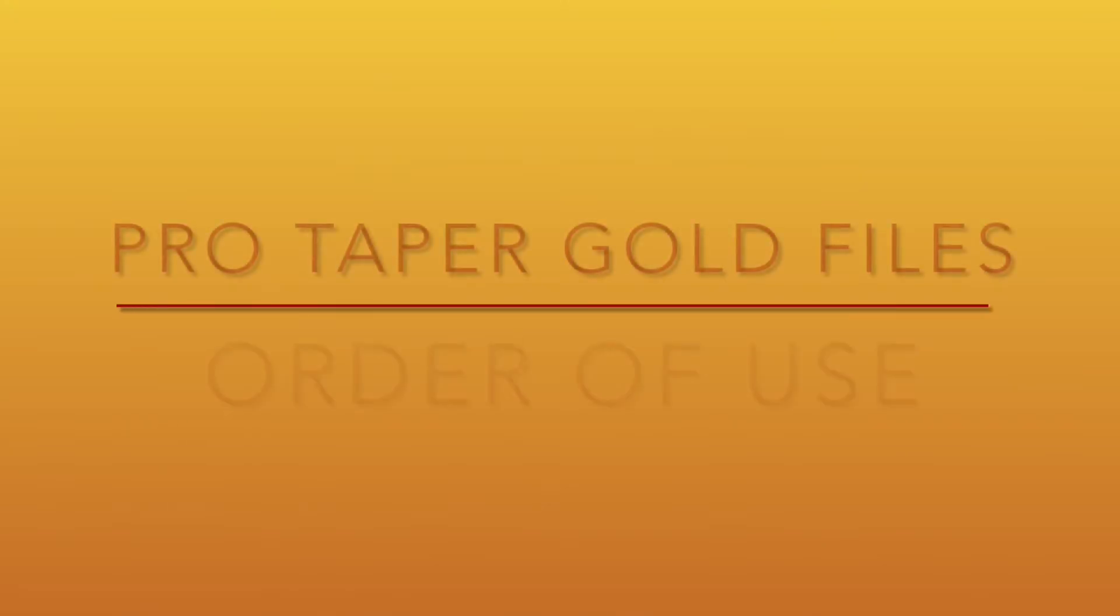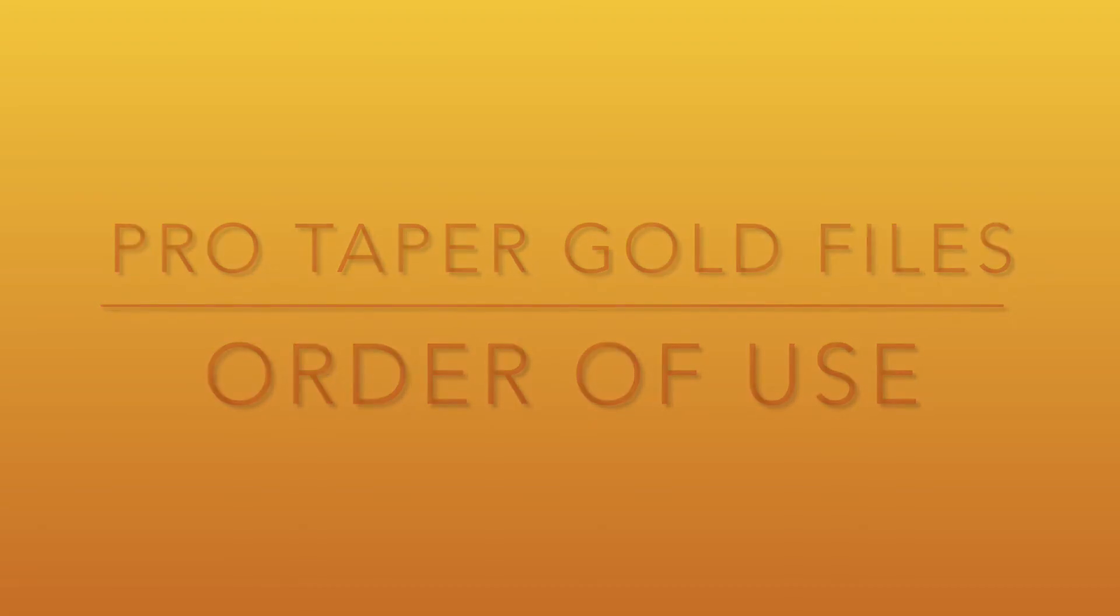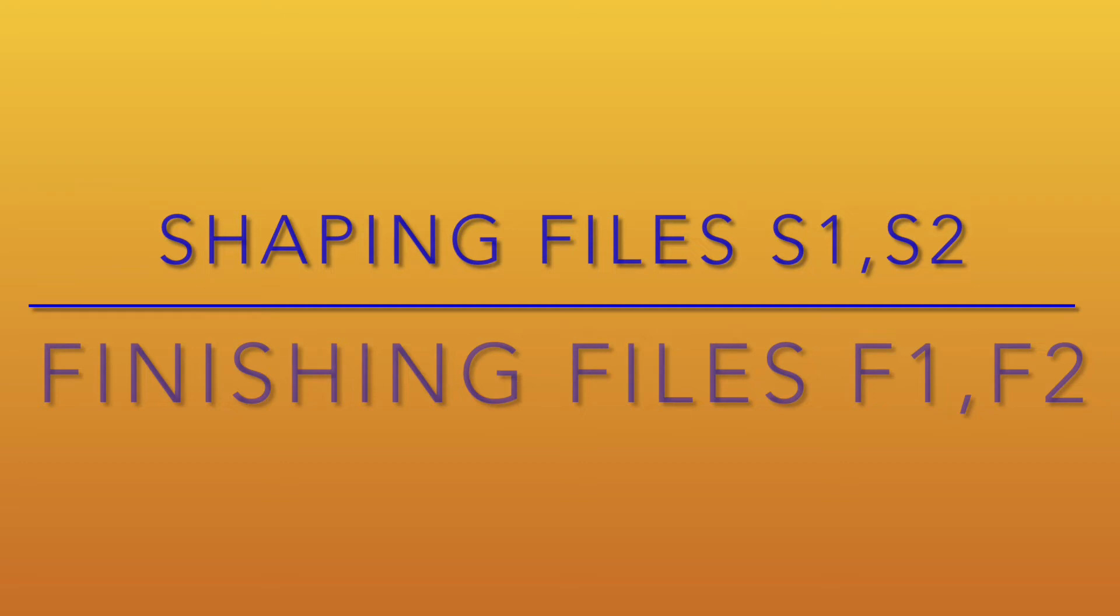I'll be using ProTaper Gold files for canal preparation. It has two types of files: the shaping files and the finishing files - S files and F files. The shaping files S1 and S2 are used first; they prepare the coronal two-thirds of the root canal. They are followed by the finishing files F1, F2, F3, or F4, and they prepare the apical one-third.